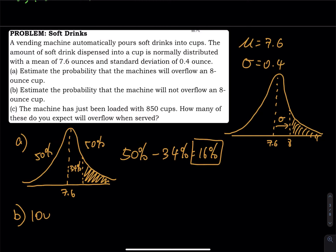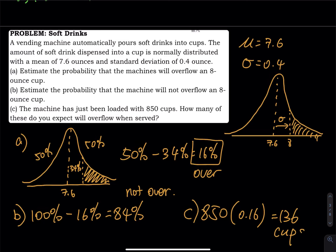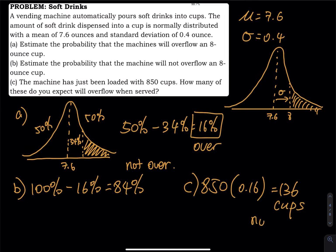Part (b): not overflow is the complement of overflow, so 100% - 16% = 84%. Part (c): if 850 cups are loaded into the machine, how many are expected to overflow? 16% of 850 = 850 × 0.16 = 136 cups will overflow.